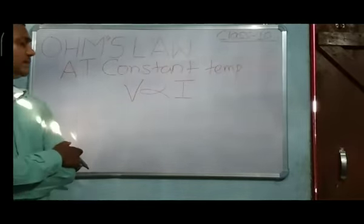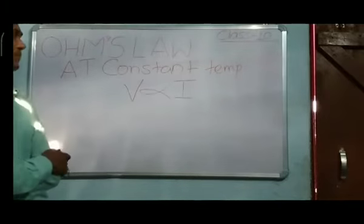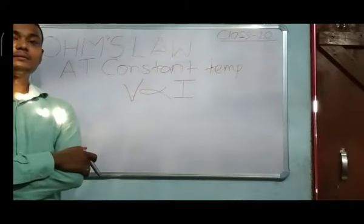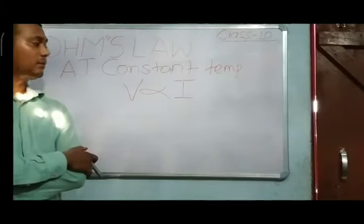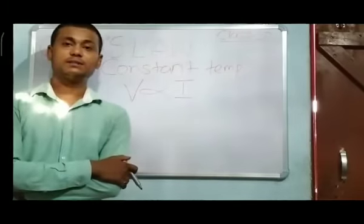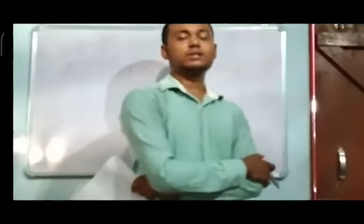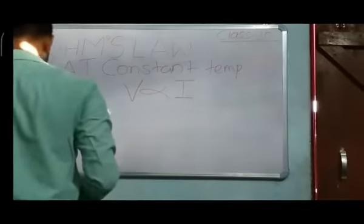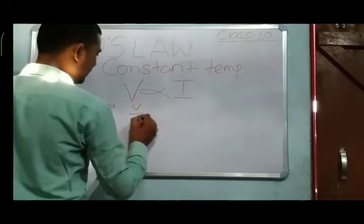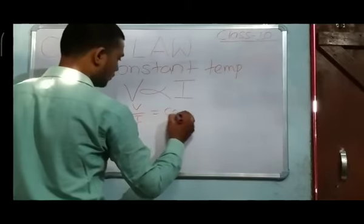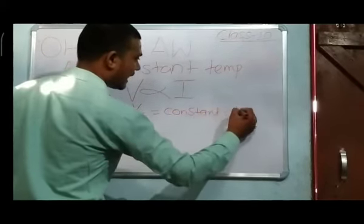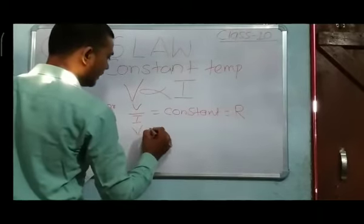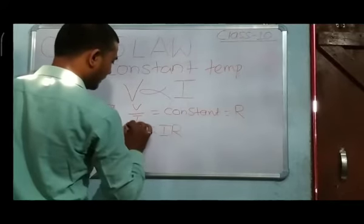At constant temperature, V is directly proportional to I. If we remove the proportional sign, we must add a proportionality constant, which is resistance. So, V upon I equals constant R, and we can write V equals IR.